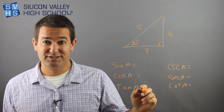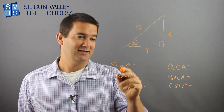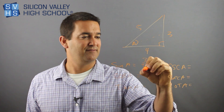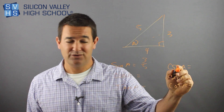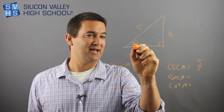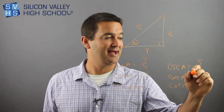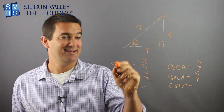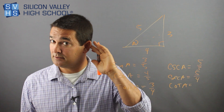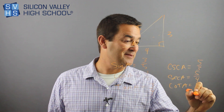All I have to do is find the first three because the others are just flips. Sine of A is opposite over hypotenuse — that's 3 over 5. So I immediately know cosecant of A is 5 over 3. Cosine of A is adjacent over hypotenuse — 4 over 5. So secant of A has to be 5 over 4. Tangent is opposite over adjacent — 3 over 4. So cotangent is 4 over 3. Done — that's all six.